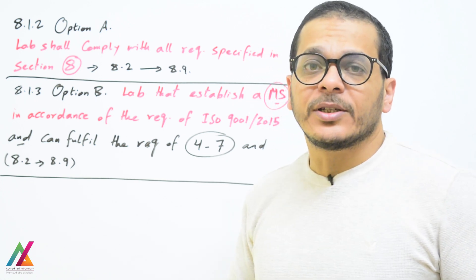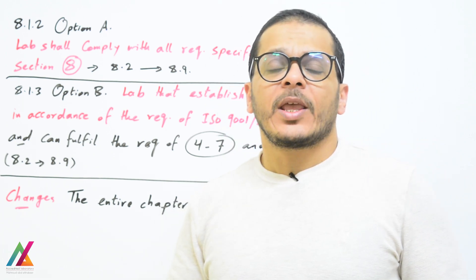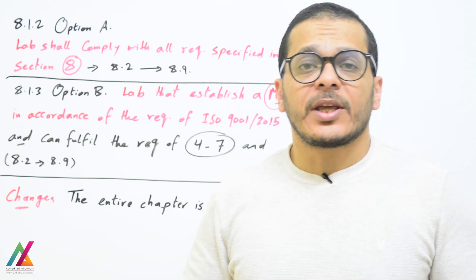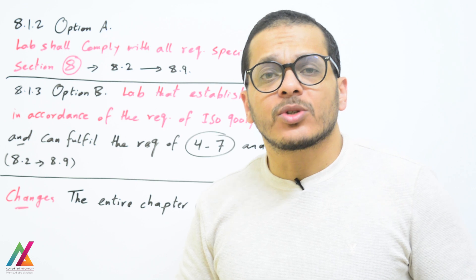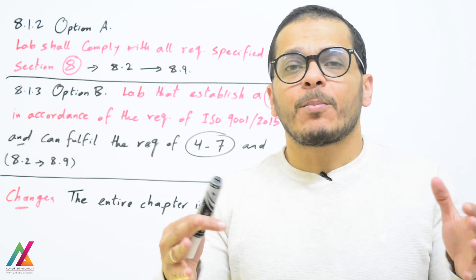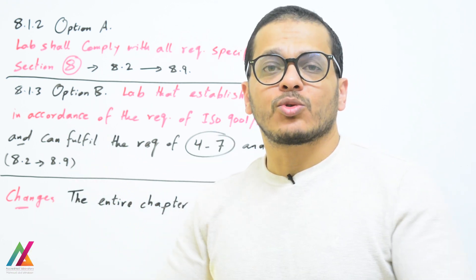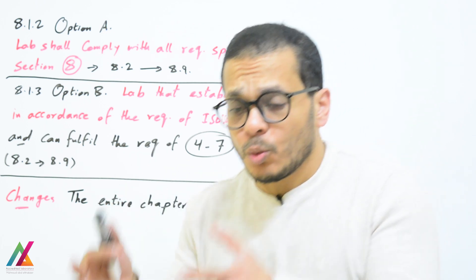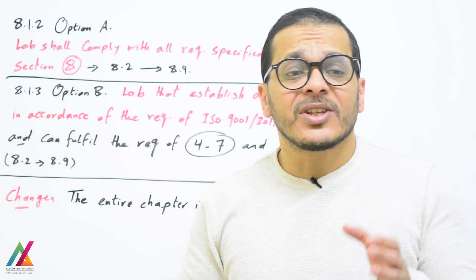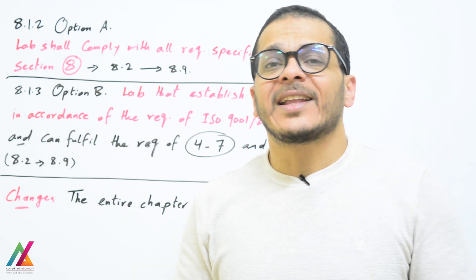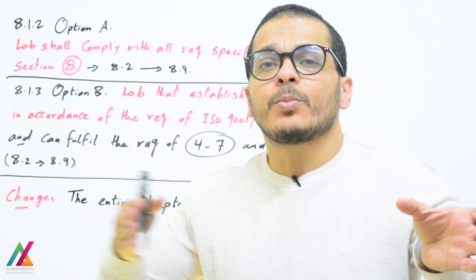The entire chapter is new in 2017 and is now simpler than before. Under Option B, laboratories already accredited to ISO 9001:2015 already have many documents related to that standard and don't need to prepare separate documents for ISO 17025. Only documents not already covered by ISO 9001 need to be prepared, specifically those related to clauses 4 to 7.